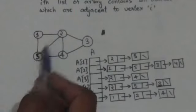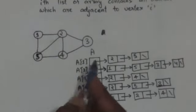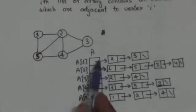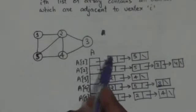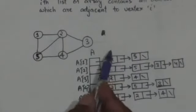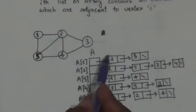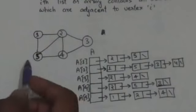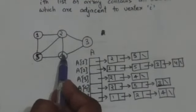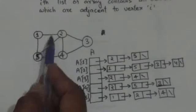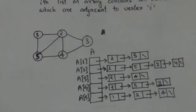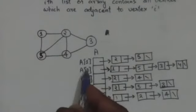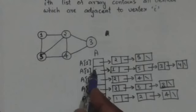Consider vertex 1 of this graph. Vertices 2 and 5 are adjacent to vertex 1. So A1, that is the first element of array A, represents the linked list of vertices adjacent to vertex 1. This linked list will contain the vertices 2 and 5.